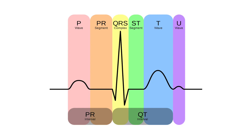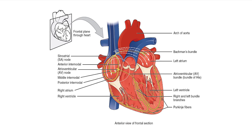When looking at a 6-second rhythm strip, for a normal rhythm, it will have a PQRS waveform. The P waveform is generated from the SA node, which causes atrial contraction — the squeeze of the atrium. The SA node then fires and the impulse travels down to the AV node, also known as the atrioventricular node, which lies just beneath the right atrium near the tricuspid valve.